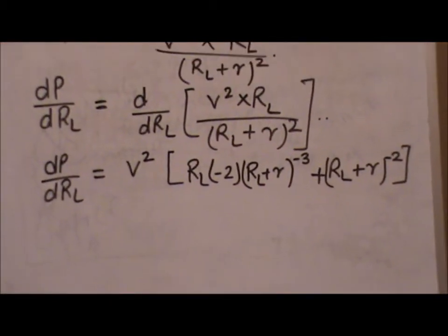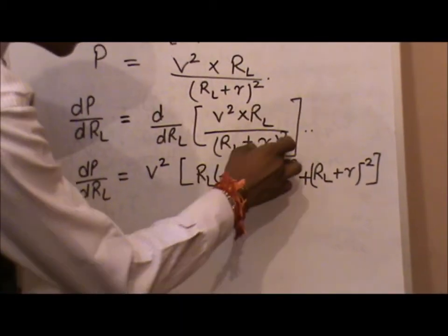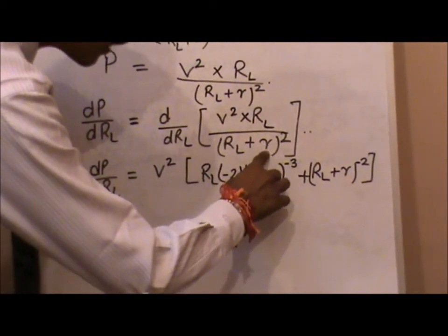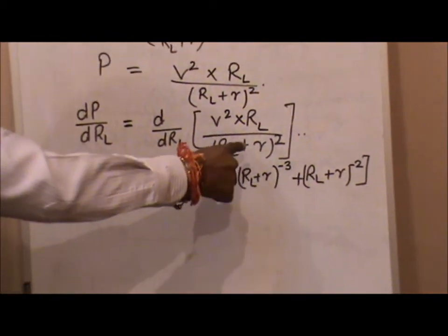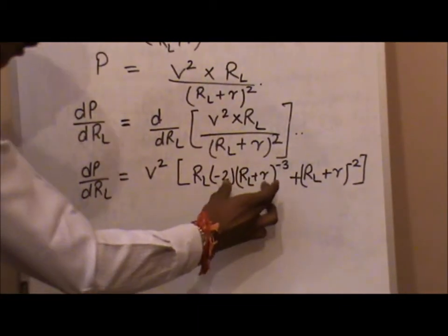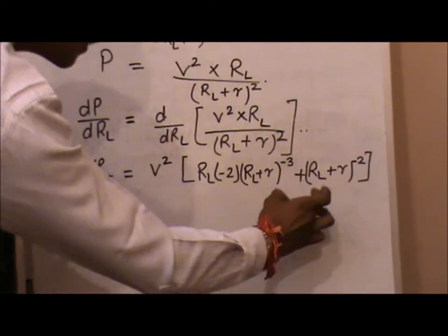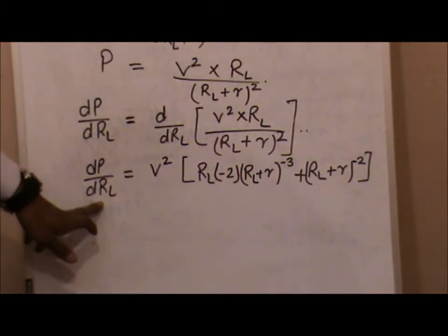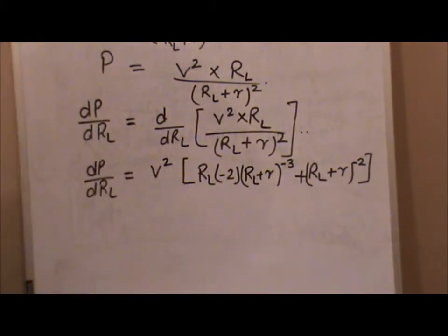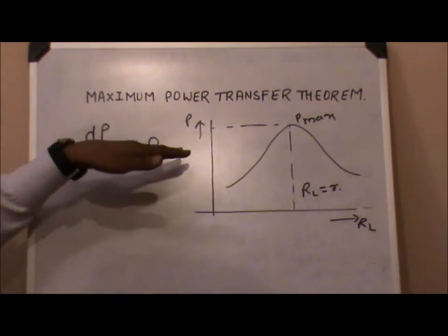What I had done is take the (RL plus r) term upwards with a negative sign, so (RL plus r) becomes to the power negative 2. Then I applied the product rule: first term times differentiation of second term, plus second term times differentiation of first term. Since RL is the variable, it disappears from one side and appears on the other.